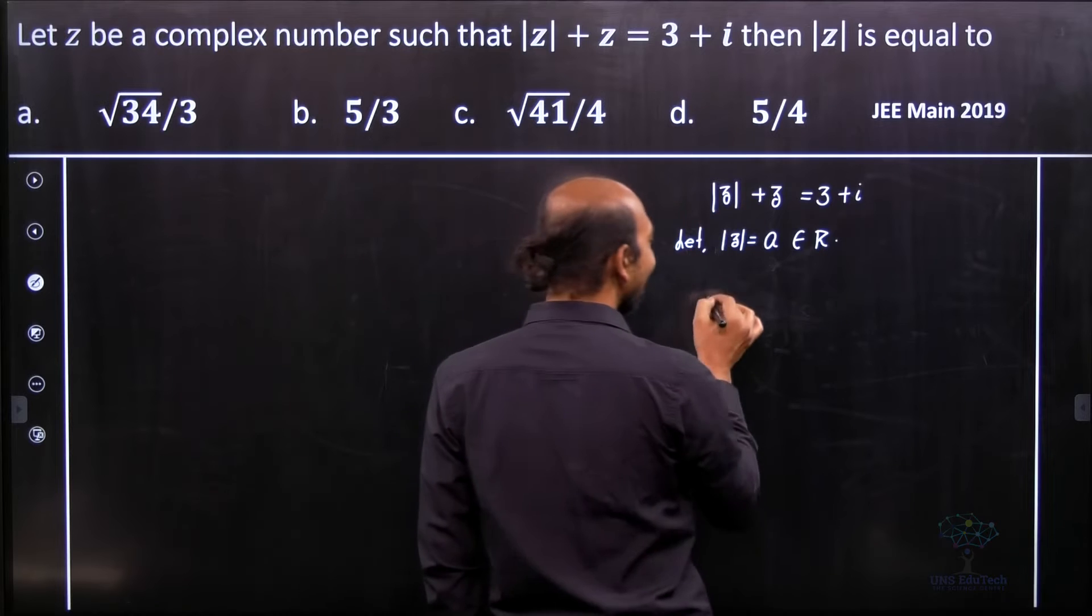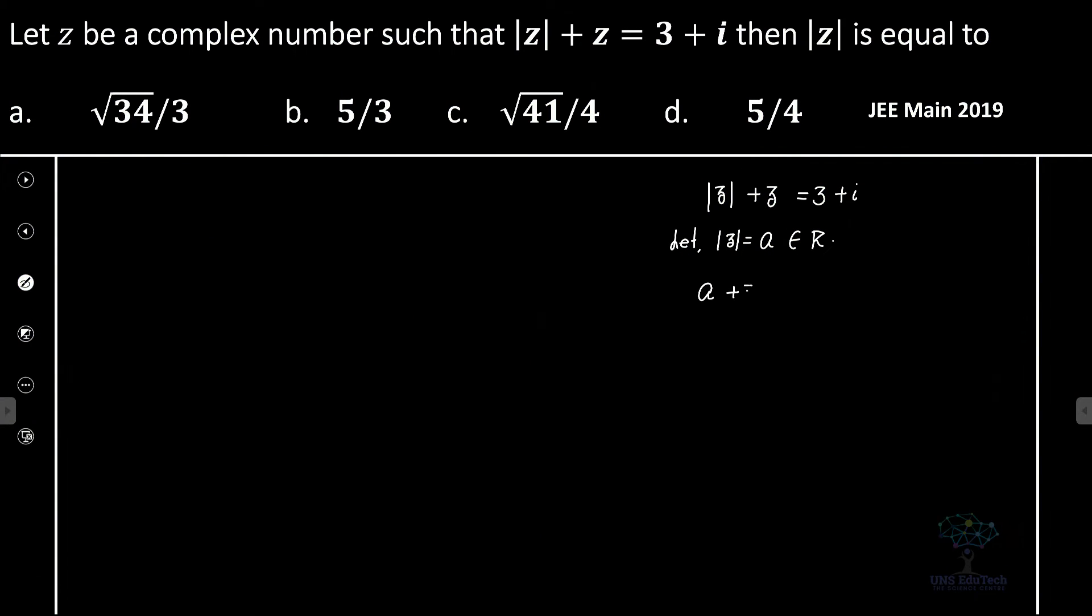So let's write this down. It becomes a plus z equals 3 plus i, which implies that my complex number z must be equal to 3 minus a plus i. So this is the complex number.